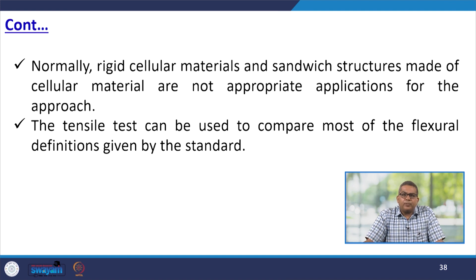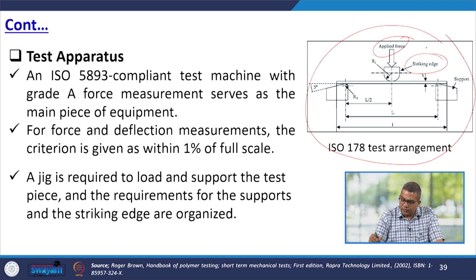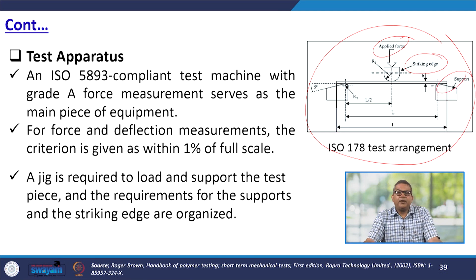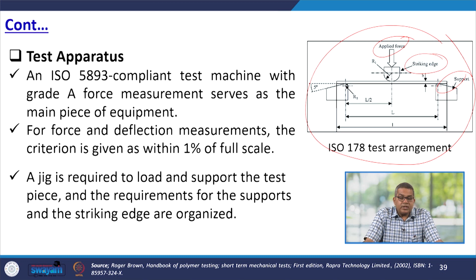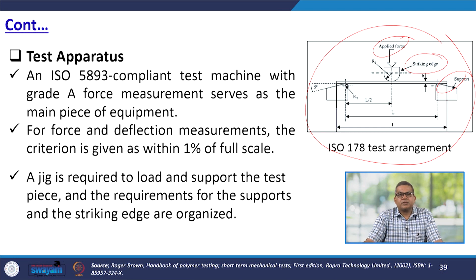The tensile test can be used to compare most of the flexural definitions given by the standard. This is the typical ISO 178 test arrangement, with a striking edge, applied force, and support. The ISO 5893-compliant test machine with Grade A force measurement serves as the main piece of equipment. For force and deflection measurement, the criterion is within 1% of full scale. A jig is required to load and support the test piece, and the requirements for the support and the striking edge are specified.